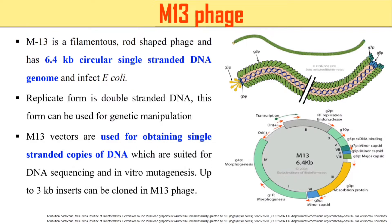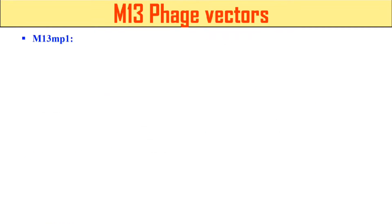Now, M13 vectors are generally used when we want to obtain the single-strand copies of our DNA. M13 is a very important phage whenever we want the single-stranded copies of our DNA.